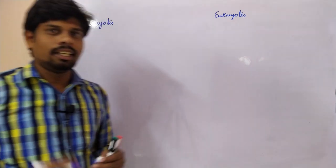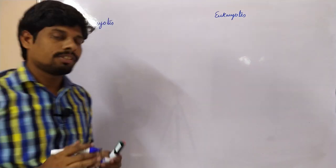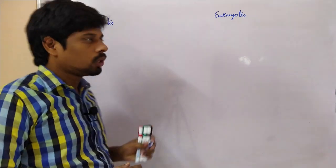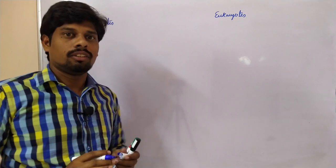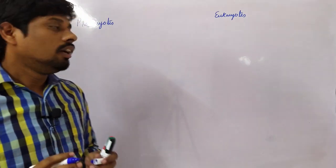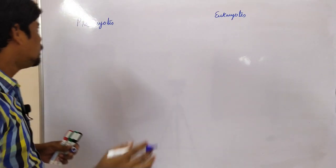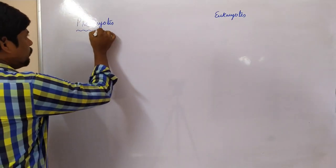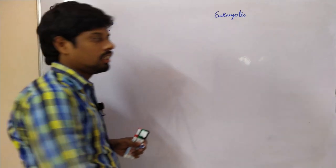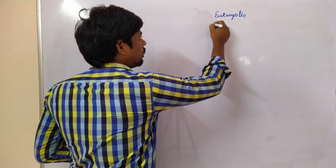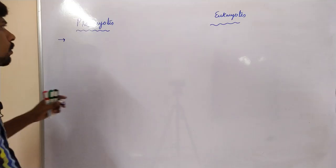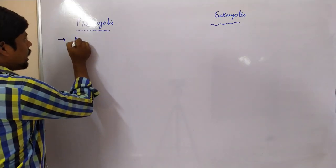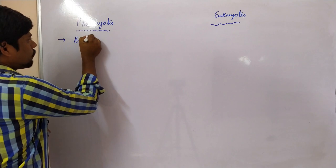What are the basic differences between prokaryotes and eukaryotes? Initially we have to know what prokaryotes and eukaryotes are. Prokaryotes include bacteria, mycoplasma, and PPLO — which means pleuropneumonia-like organisms.